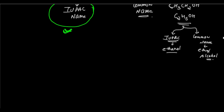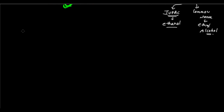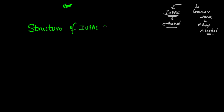So let's have a look at IUPAC nomenclature. IUPAC nomenclature basically creates a structure for a name. There is a structure of the name of an organic compound, and there are many parts to that structure. So, the structure of an IUPAC name — for an IUPAC name, there is a fixed structure.